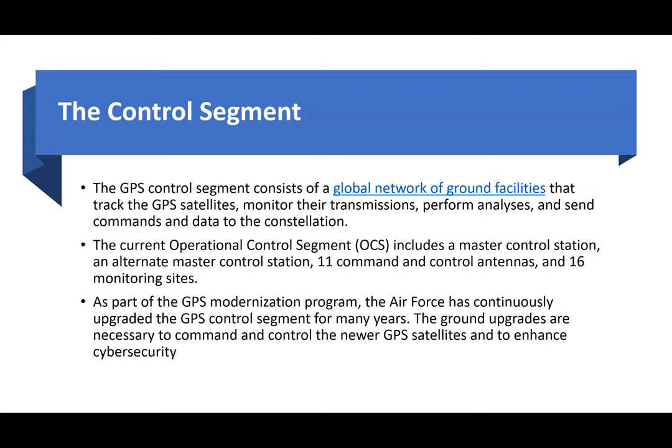The control segment consists of a global network of ground facilities that track the GPS satellites, monitor transmissions, perform analyses, and send commands and data to the constellation. The current operational control segment includes a master control station, an alternate master control station, 11 command and control antennas, and 16 monitoring sites globally. As part of the GPS modernization program, the Air Force has upgraded the control segment to command newer GPS satellites and to enhance cybersecurity.